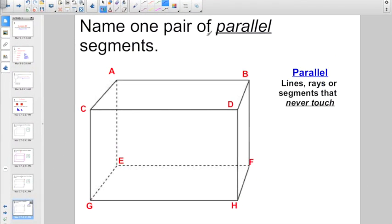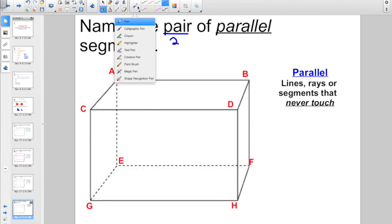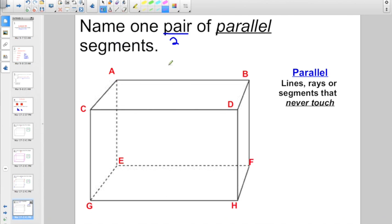Here, we have to name one pair. Remember, if they're asking for a pair, that means they want two parallel segments. Let's take a look right now. What do we have for parallel? Parallel means lines, rays, or segments that never touch. There's actually quite a few to choose from here. I'm going to use this guy here.